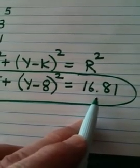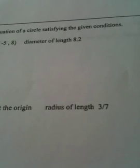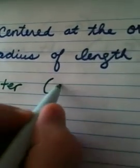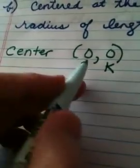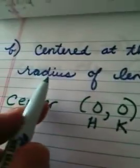So this is my answer: X plus 5 quantity squared plus Y minus 8 quantity squared equals 16.81. Now the next one tells me to find an equation that's centered at the origin. The radius has length 3/7. Okay, let me go to my paper, get a little bit more room here. So my circle is centered at the origin, so that means my center is 0 comma 0. The center is 0, 0, so that means H is 0 and K is 0. The center is always H, K, that's what you need to know to plug into the formula.